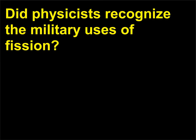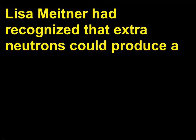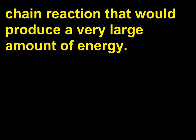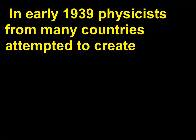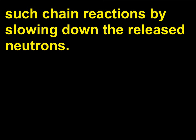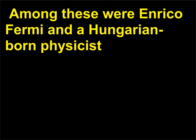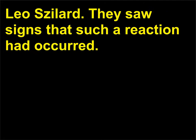Did physicists recognize the military uses of fission? Lise Meitner had recognized that extra neutrons could produce a chain reaction that would release a very large amount of energy. In early 1939, physicists from many countries attempted to create such chain reactions by slowing down the released neutrons. Among these were Enrico Fermi and Hungarian-born physicist Leo Szilard, who saw signs that such a reaction had occurred.